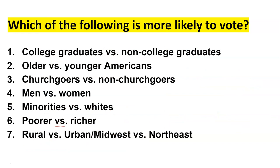Who is more likely to vote? College graduates vote more than non-college graduates. Older Americans vote more than younger Americans. Those who attend church are more likely to vote. Women are more likely to vote, as are whites and the wealthier, as well as those in rural areas like the Midwest. It doesn't mean there won't be more total voters in an urban area, but these groups are statistically more likely to vote when we generalize.